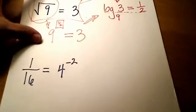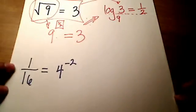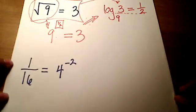OK, here's another example. Let's try this one. Let's slide this down. Give this one a go. So I've got 1 16th is equal to 4 to the negative 2.